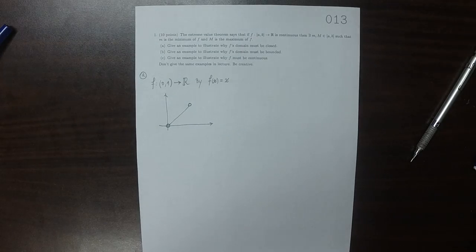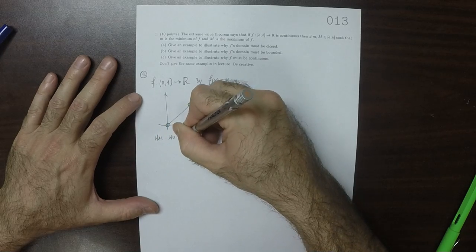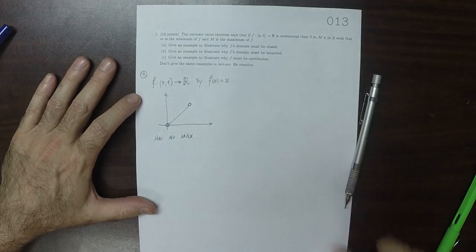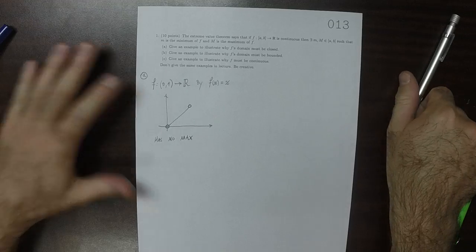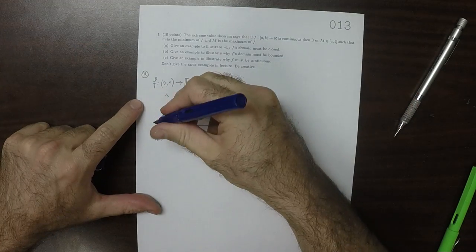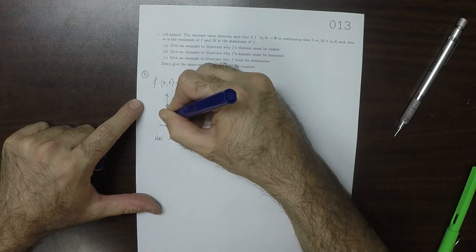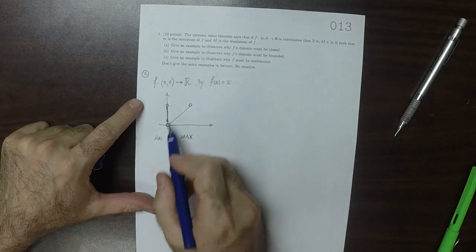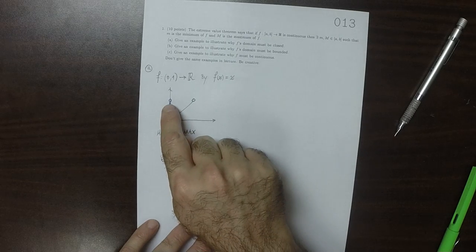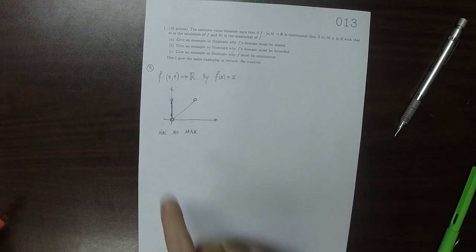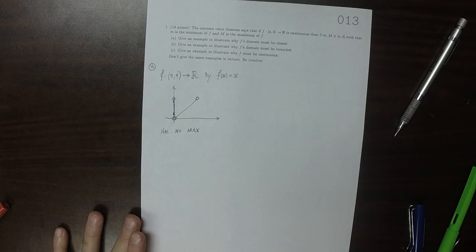So this function has no maximum. So this function has no max because this set right here, that's the image of the function and there is no maximum element. There's no maximum element in that set. So it also has no min but having no max is enough.